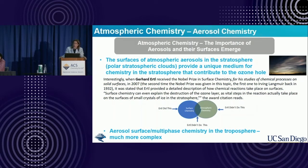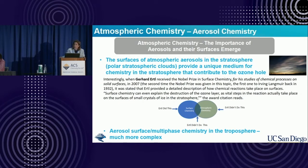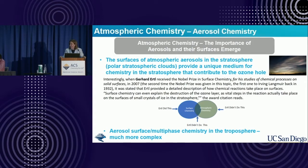I'm going to talk about aerosol chemistry—the importance of aerosols and their surfaces, and how they have emerged over the last many years. The surface of atmospheric aerosols in the stratosphere has been pretty well studied. Polar stratospheric clouds and ice particles contribute to the ozone hole. When the Nobel Prize was given in surface chemistry for Gerhard Ertl, NPR said he did chemistry related to the ozone hole because of reactions on ice surfaces. I was sitting in the car and said, no, he didn't.